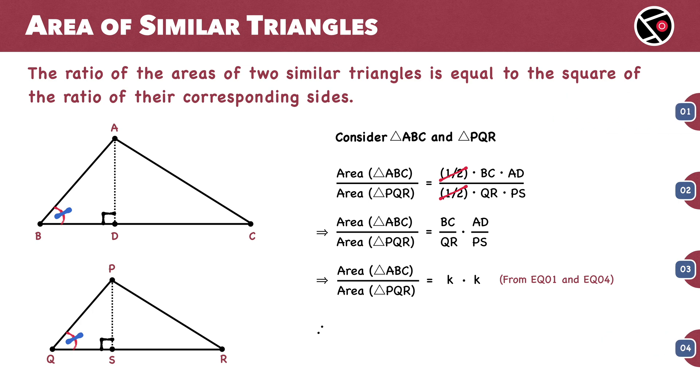The ratio of area of triangle ABC to area of triangle PQR is K square. And with that we have proven that the ratio of the areas of two similar triangles is the square of the ratio of their corresponding sides.